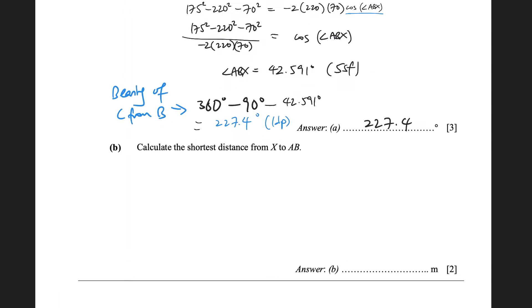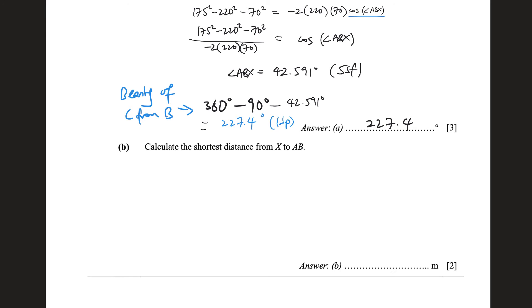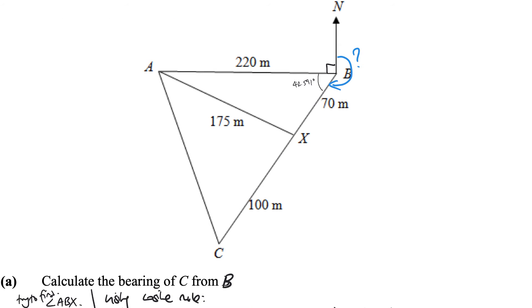And the next one. Calculate the shortest distance from X to AB. So from X to AB, we drop the perpendicular. It's what we usually know. So the shortest distance has to be a perpendicular. This is my shortest distance. Can I solve for this?